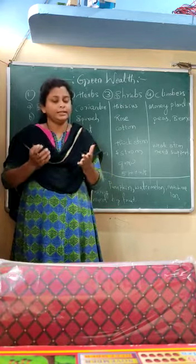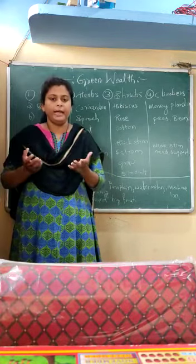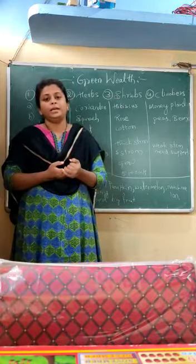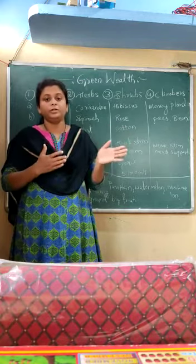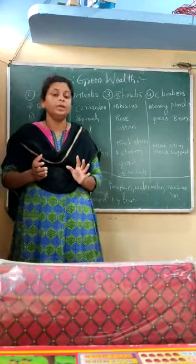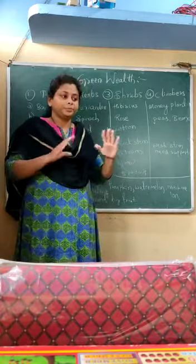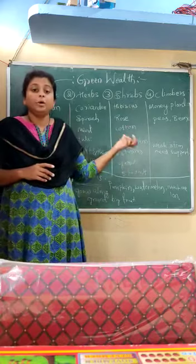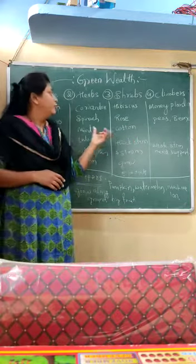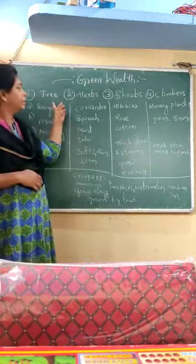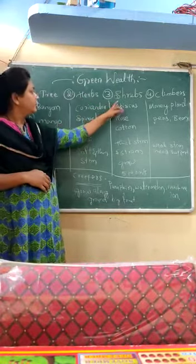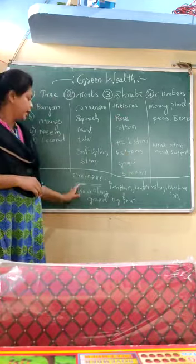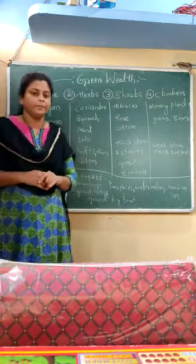So can we learn about all these plants in a systematic way, rather than just randomly observing them? Yes, we can! To avoid all this confusion, we have divided all this green wealth into some types. The first one is tree, second one is herb, third one is shrubs, fourth one is climbers, and the fifth one is creepers.